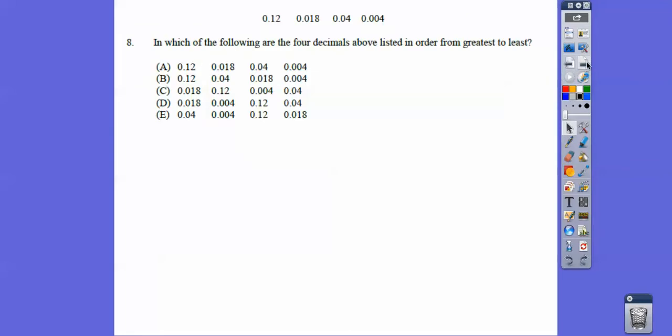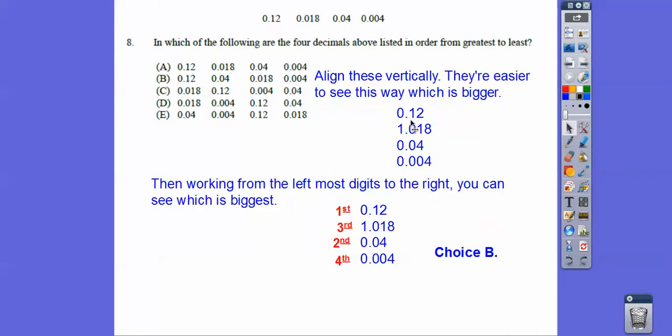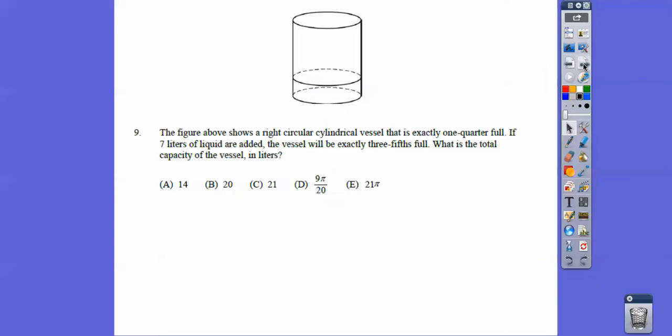Which of the following are the four decimals listed above in order from greatest to least? I like to list these guys vertically so I can just line up the decimals right here. So this is the biggest number, and then once we've got the biggest number, move over. This is the next biggest number. And so just keep going. This is going to be the next, the biggest number is going to be this guy right here, and then finally the smallest number. So if you list them in order, then you can put those decimals right there, so choice B.